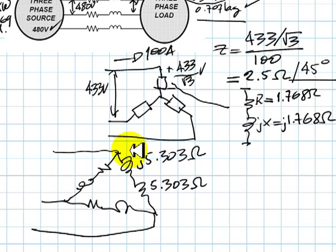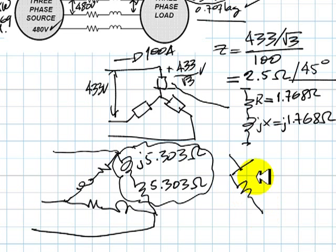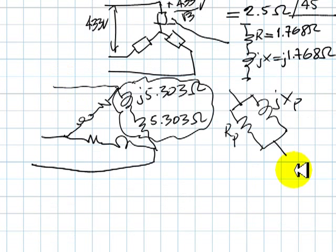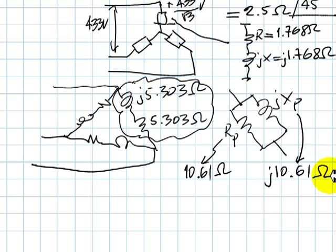But now we want to represent this as a parallel of a resistor and an inductor. And we've done that before. We do that in the quiz. Represent each one of those in the delta by this R in parallel with this jXp. You do exactly what you did in your assignment or homework. And you get 10.61 ohms here, and this one has the value of 10.61 ohms as well.